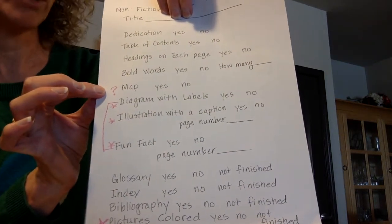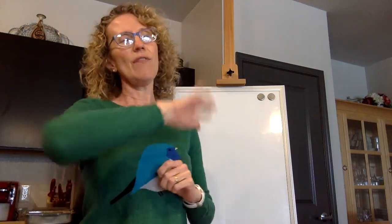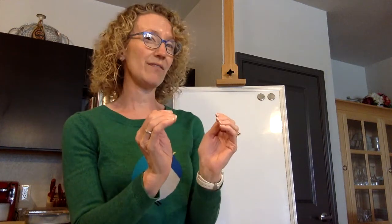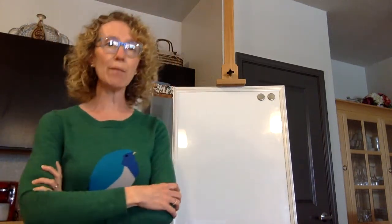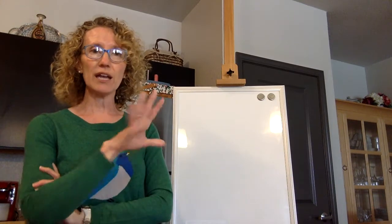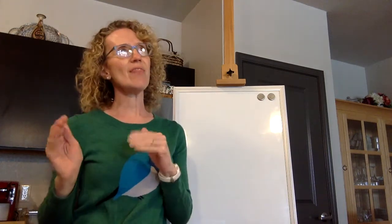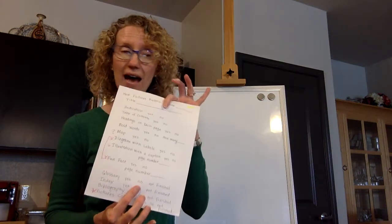The word 'map' has a question mark by it because for some of the animals you are researching, it could be really interesting to put a map in showing where they live. If you have tigers, for example, at one time tigers lived in a large area in Asia. You could draw that map and show where they used to live in one color and where they live now in a different color. If you want to draw a map, use your computer and type in your animal's name, then 'range map' — like 'Tiger Range Map' — and pick a simple one to draw.